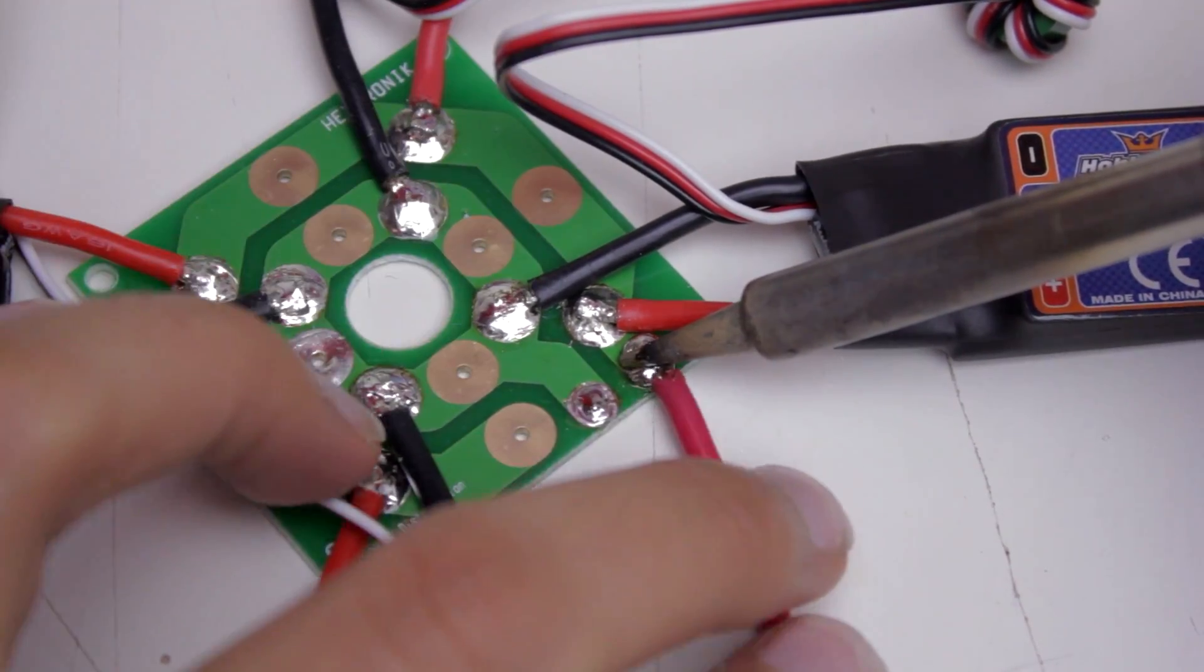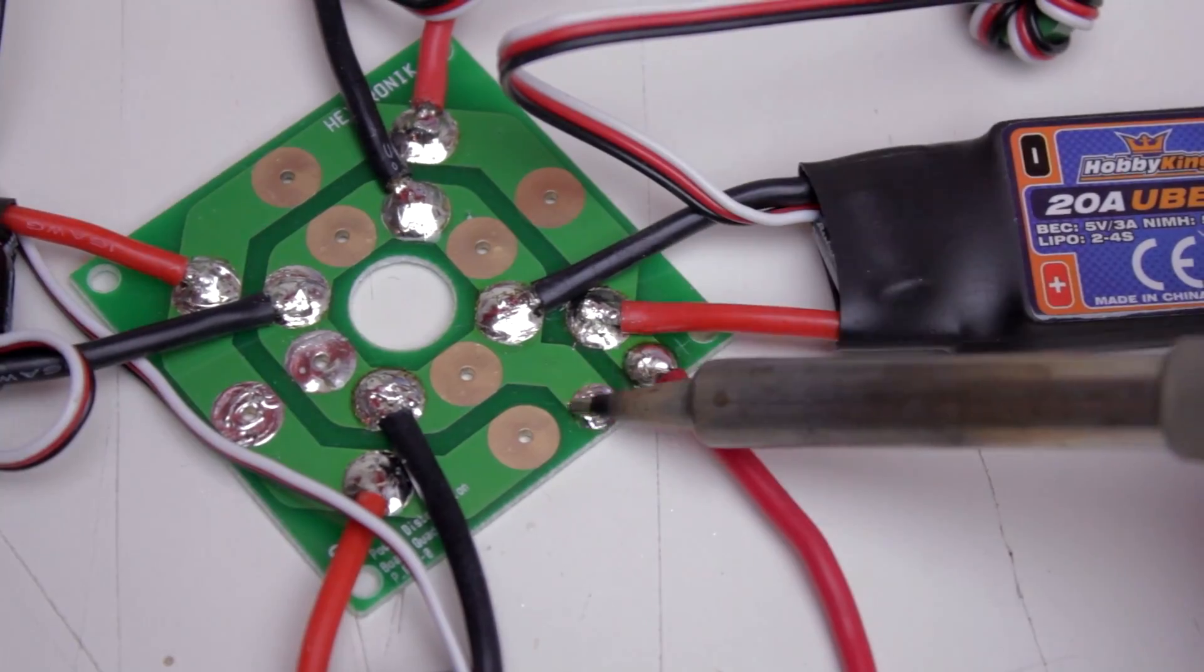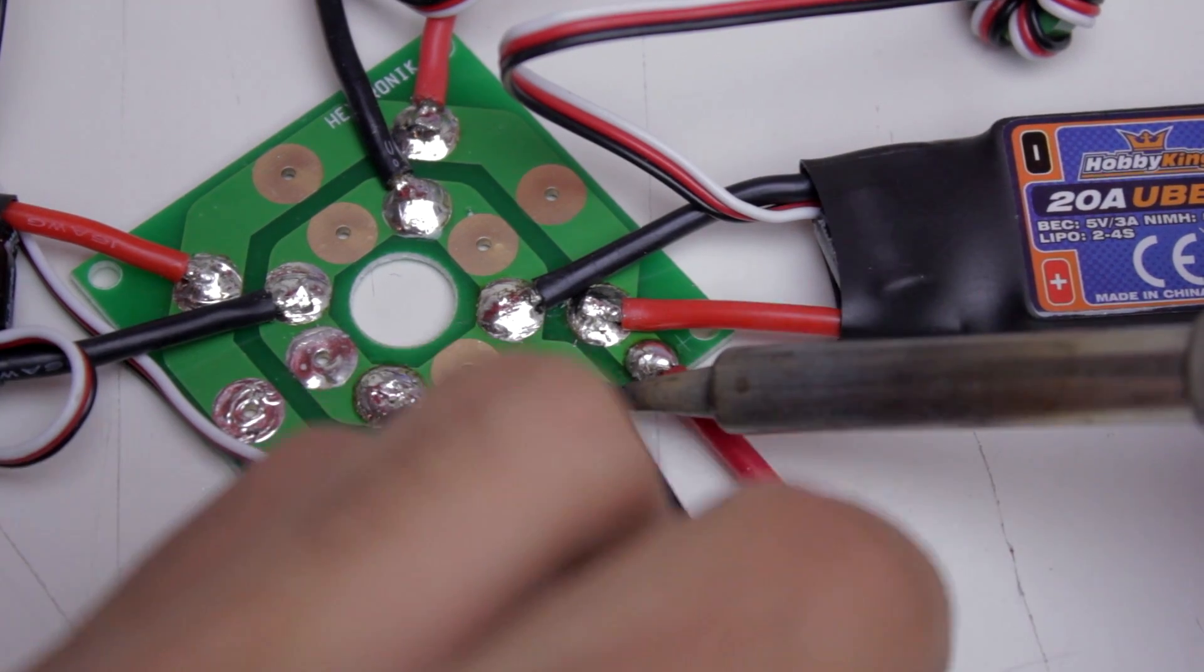So with these wires I'm doing exactly the same thing I did with the ESCs. I tinned the wires, I put some solder on the connections, and then I heated both of them up together.